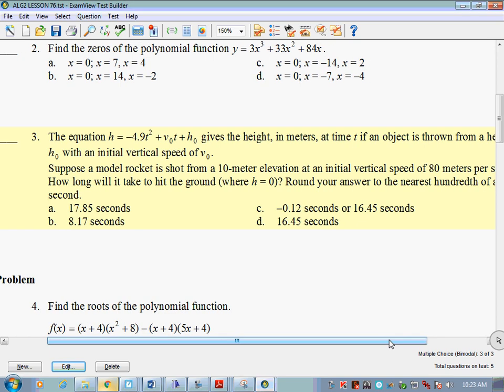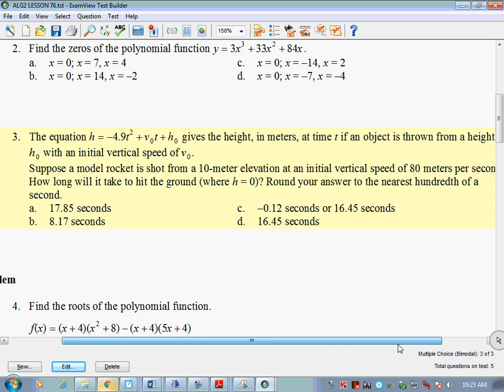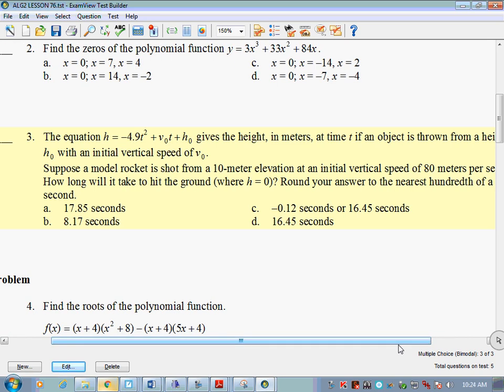And we've seen questions like number 3, the equation h equals negative 4.9t squared gives all this information, and we have to plug some things into that equation. How long will it take it to hit the ground where h equals 0? Let's see. So let's start off here. We want h to equal 0. So we've got negative 4.9t squared, where velocity, v is velocity. Does it say in here what my velocity is? Initial, it should be the same as initial speed, I believe. 80, 10. We've got 80 and 10. Suppose a rocket is shot from a 10-meter elevation. That should be my height at the end. So we should get plus 80t plus 10. Is that correct? Hopefully.